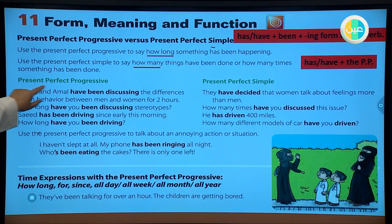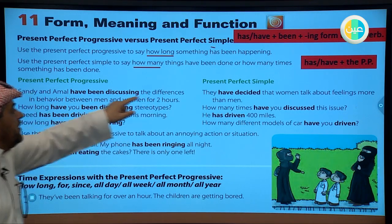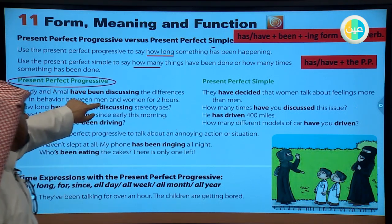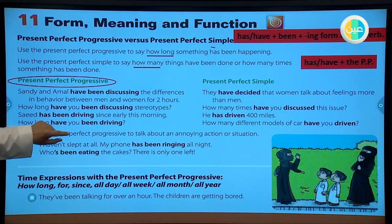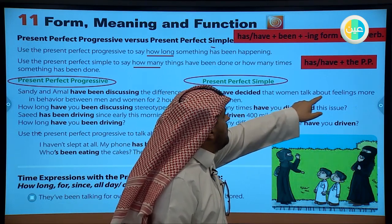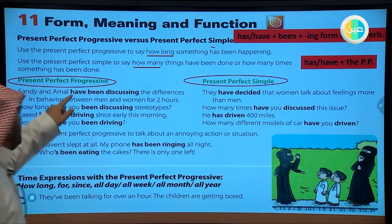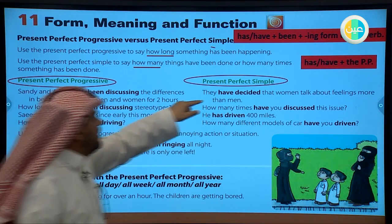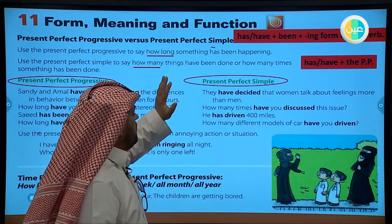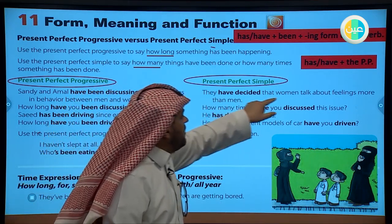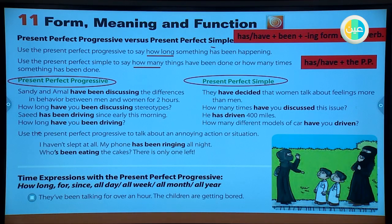For the present perfect progressive: 'Sandy and Adam have been discussing the differences.' If we use the same verb in the present perfect simple: 'They have decided that women talk about feelings more than men.' 'Have been discussing' concentrates on time, while 'have decided' shows they reached a conclusion or decision.